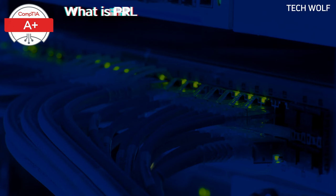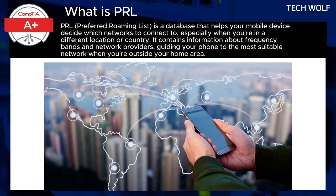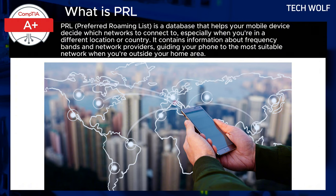What is PRL? PRL stands for Preferred Roaming List, and it is a database that helps your mobile device decide which network to connect to, especially when you are in a different location or country. It contains information about frequency bands and network providers, guiding your phone to the most suitable network when you are outside your home area.